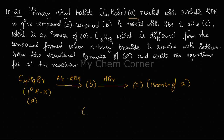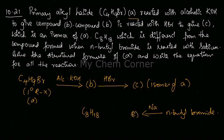Additionally, compound A reacted with sodium gives C8H18, which is different from the compound formed when n-butyl bromide is reacted with sodium. So when n-butyl bromide is treated with sodium in dry ether, the resulting compound E should not be equal to C8H18 obtained from A.